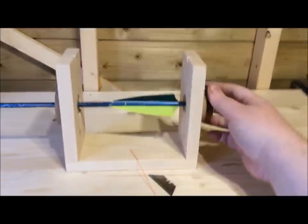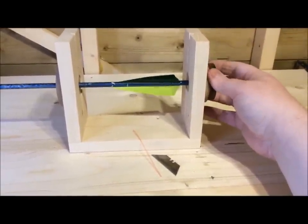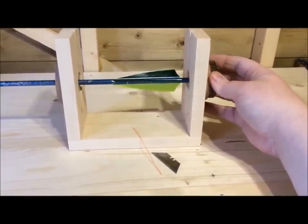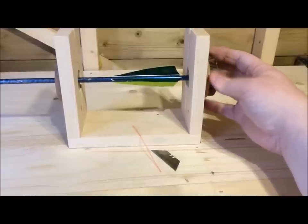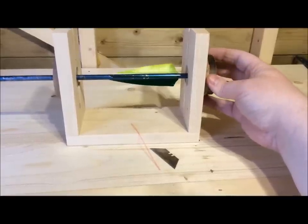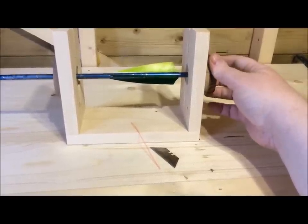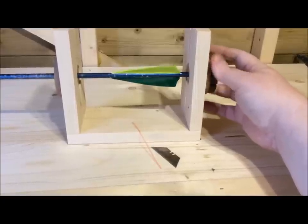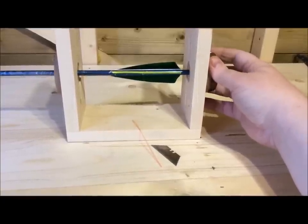And there we go, we have ourselves a finished jig. As you see, turn that and it spins the arrow, which is exactly what we wanted to do. We can then use the clamp to place the feathers anywhere on there. So you can have three feathers, four feathers, two feathers, whatever combinations you like. It's down to you.